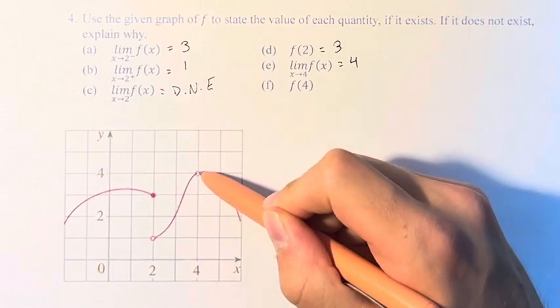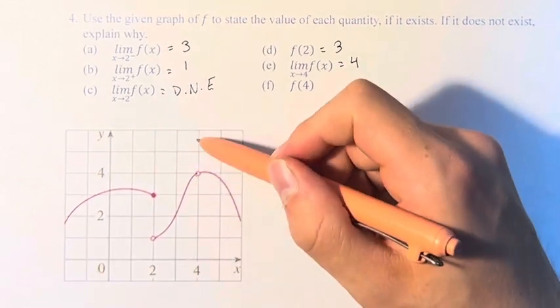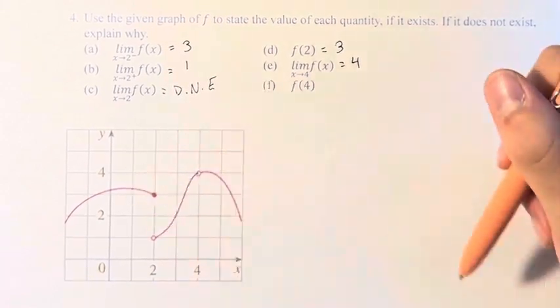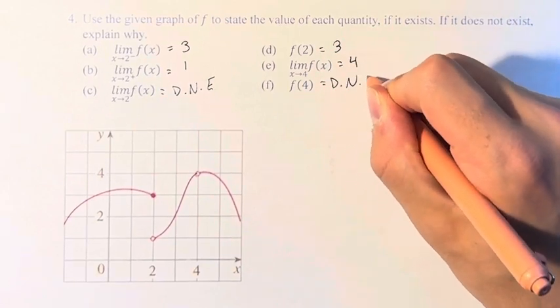However, at 4, notice that we have an open circle, which means the function does not exist. We don't have a closed circle or a line passing through at x equals 4. Therefore, f of 4 does not exist.